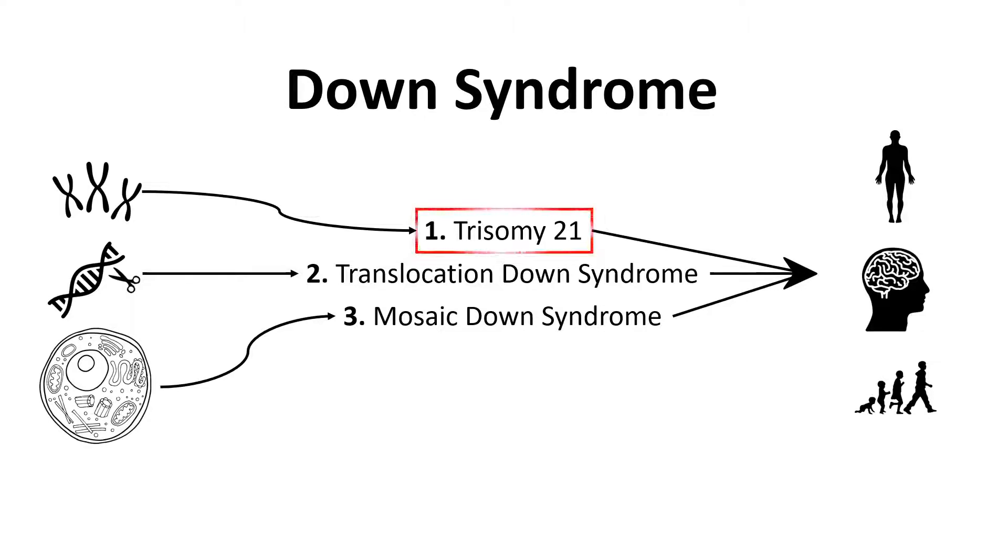We will be focusing on the molecular mechanism that causes Trisomy 21, which is the most common type of Down syndrome as it is responsible for 95% of the Down syndrome cases.